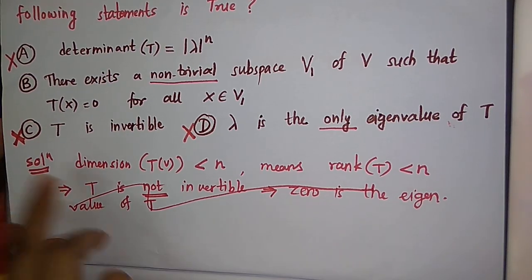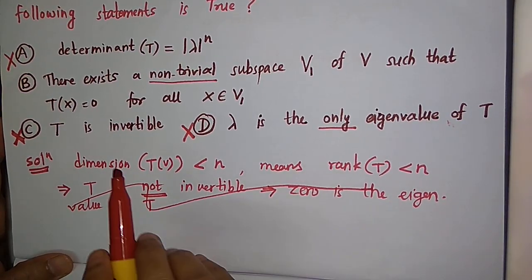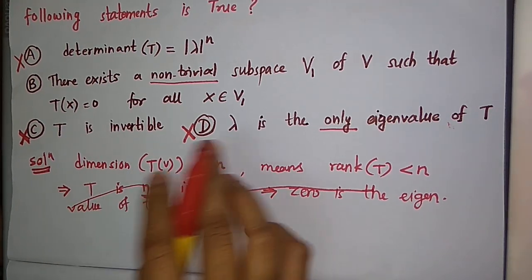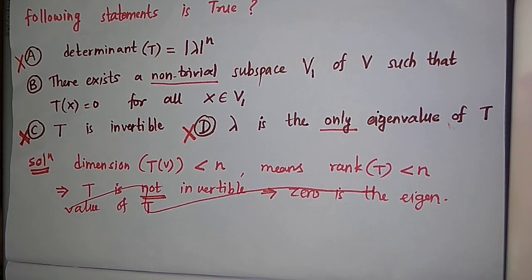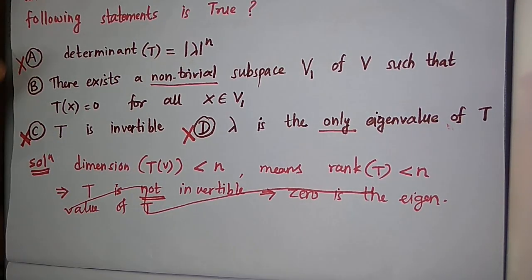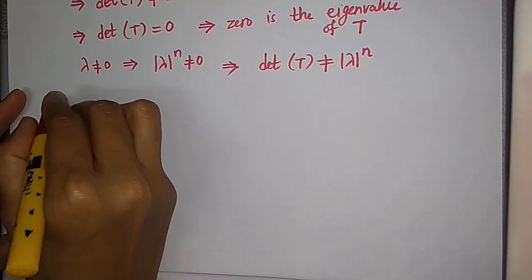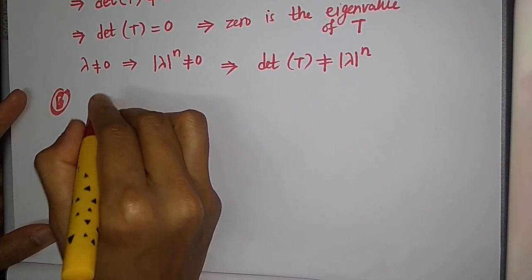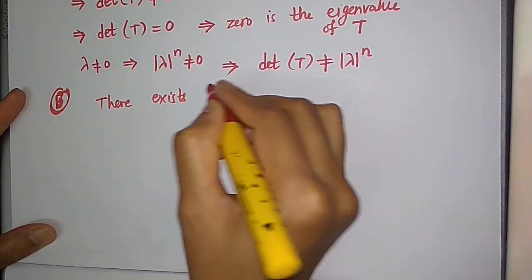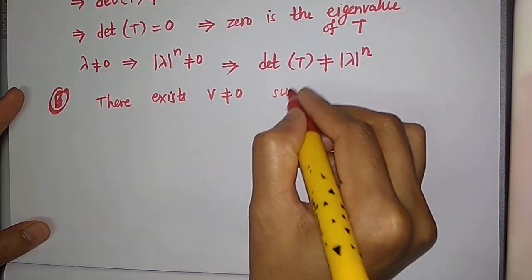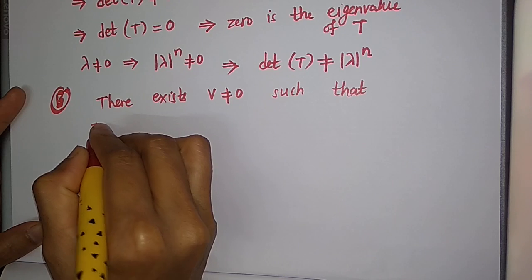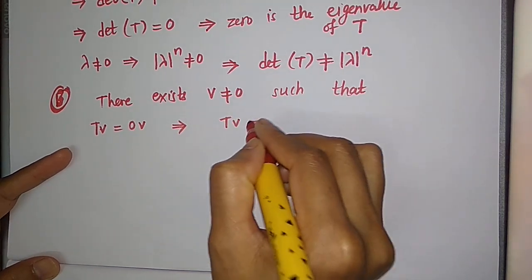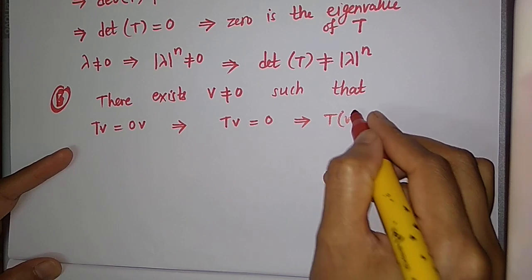Now let us prove option B. Option B says there exists a non-trivial subspace V1 of V such that T(x) = 0 for all x in V1. We know that 0 is an eigenvalue of T, so there exists a non-zero vector v such that T(v) = 0·v, which implies T(v) = 0.